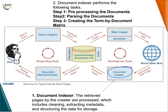Next is the document indexer. The pages retrieved by the crawlers are processed, which includes cleaning, extracting metadata, and structuring data for storage. The document indexer performs the following tasks: first, preprocessing the documents; second, parsing the documents; and third, creating the term by document matrix.